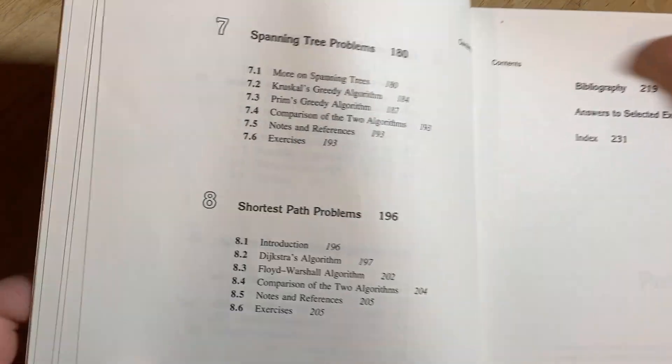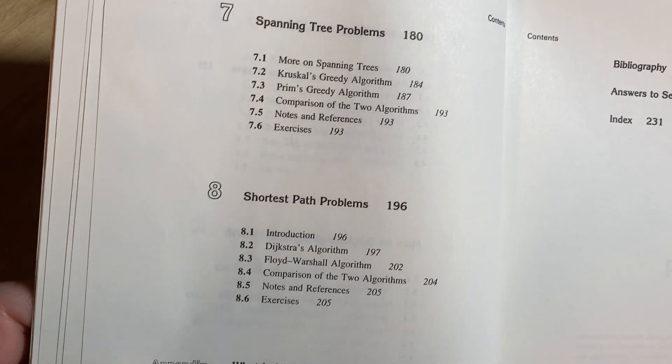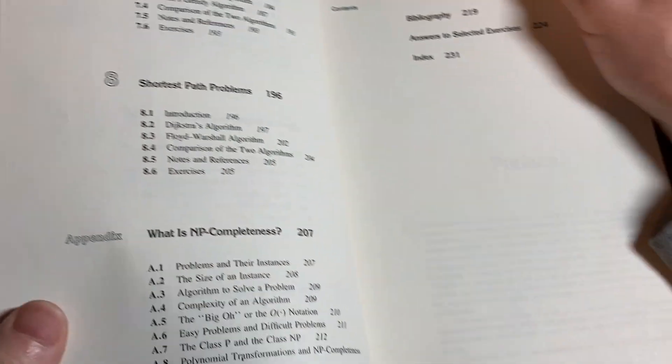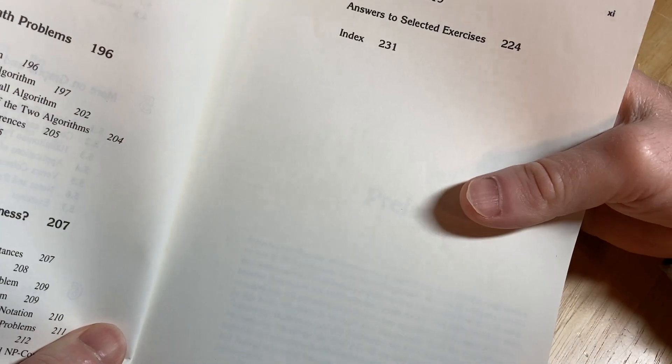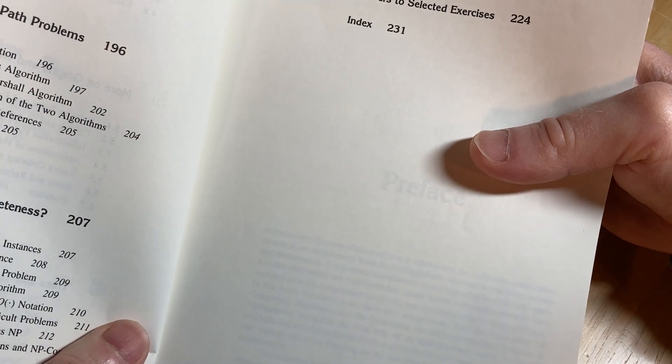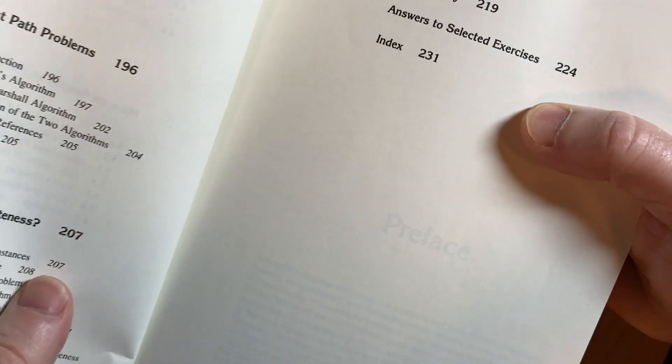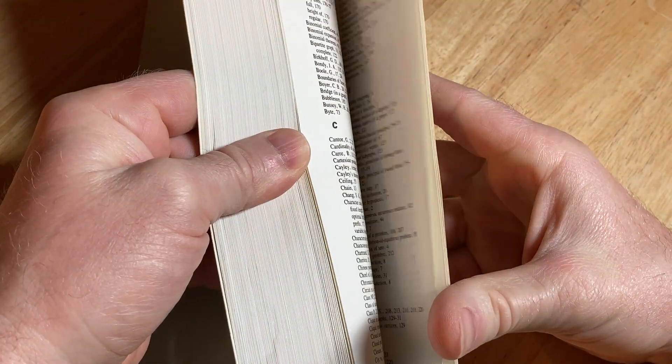This could serve as a good second source for learning. You can get extra practice problems. That's probably why I bought it. It's been a while. I probably bought this book when I was in discrete math. Answers to selected exercises. That's page 224. Let's look there.